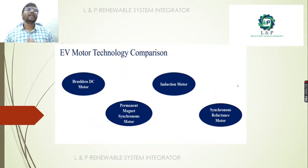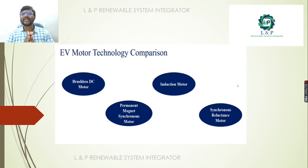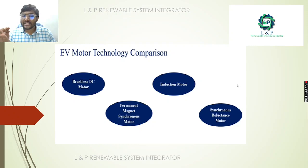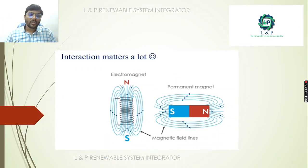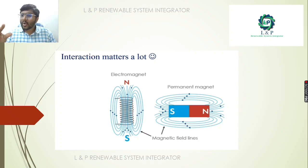The important motor technologies being used in electric vehicles today include the brushless DC motor, permanent magnet synchronous motor, induction motors, and synchronous reluctance motor. Most importantly, magnets — both electromagnets and permanent magnets — play a very important role in running these electrical motors, particularly in the rotor part.